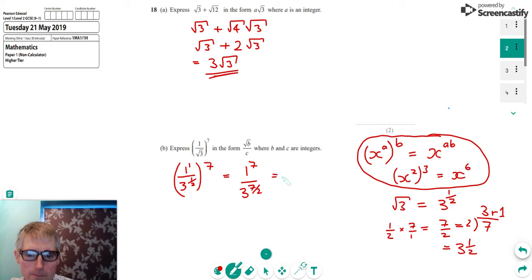So what we can do, we can say 1 to any power is just 1. And the power now on the 3, written in a different way, is 3 and a half.